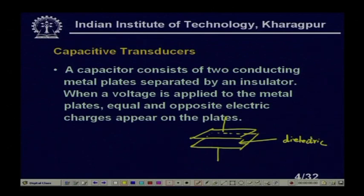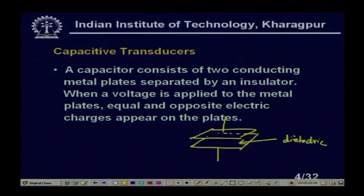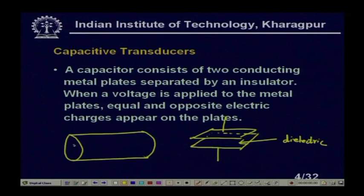When a voltage is applied to the metal plates, equal and opposite electric charges appear on the plates. The plates can also be cylindrical - one plate like an outer cylinder and another inside. We can take two terminals from such a configuration and measure the capacitance; this is also a capacitance sensor. The ratio of the charge to the voltage is the capacitance.